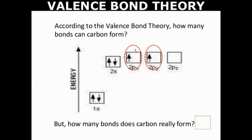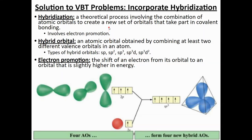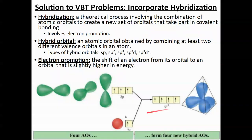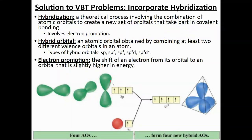So what we do is incorporate new processes called electron promotion and hybridization. What that essentially means is that the orbitals within an atom will actually mix together to create hybrid orbitals — these combo orbitals. For example, an S joins the two P orbitals in the same atom to form SP3, which means it's made up of one S and three P orbitals.